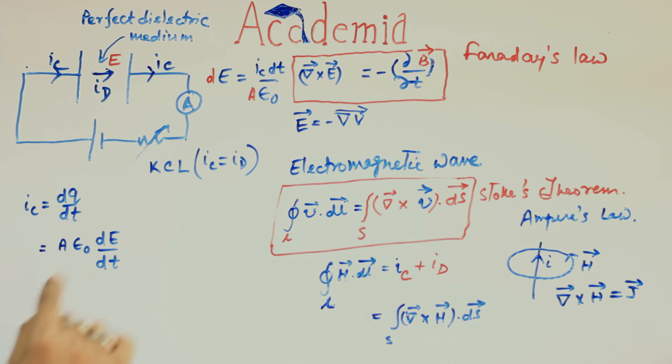Since epsilon0 is constant for this medium, it can easily go inside this differentiation. Now, we already know D is equal to epsilon0 E. So, IC is equal to A dD dt. Since IC is equal to ID, so ID is equal to A dD dt.